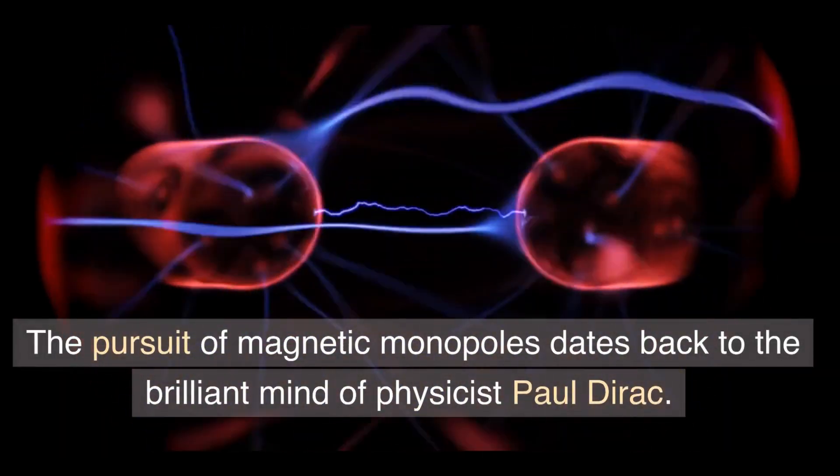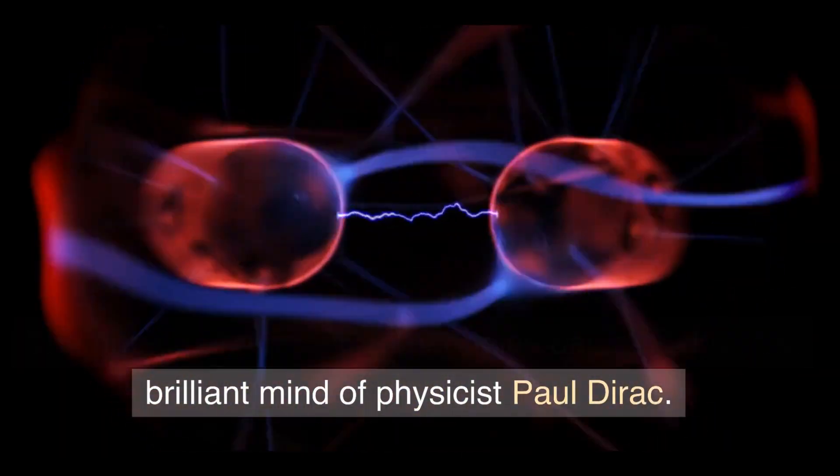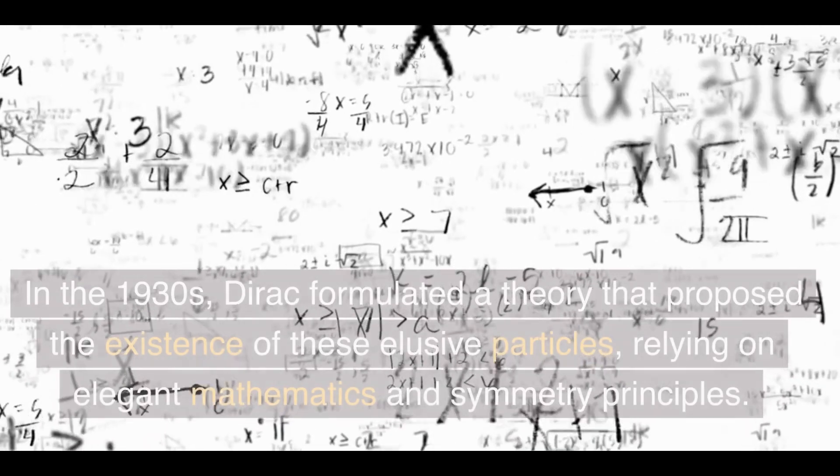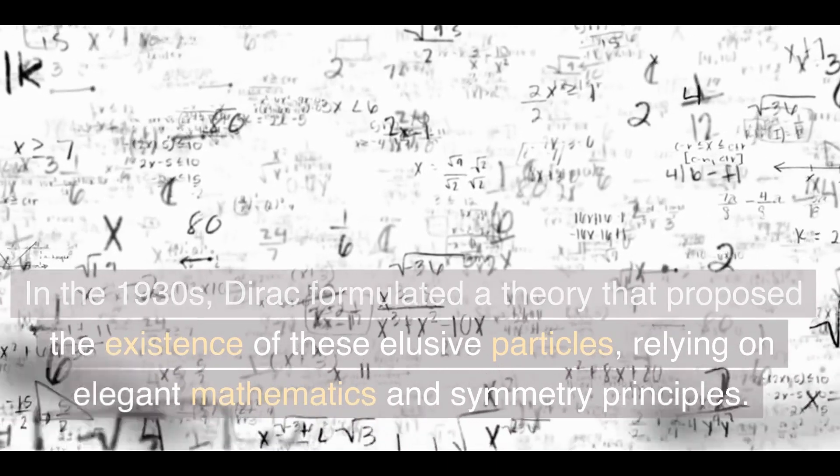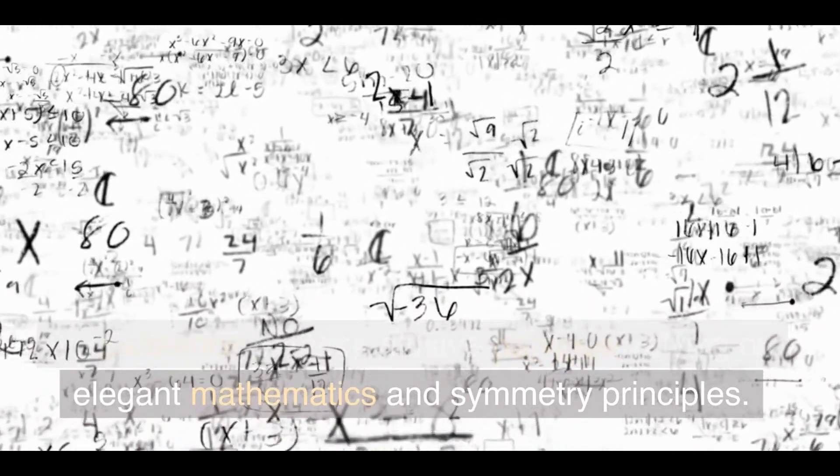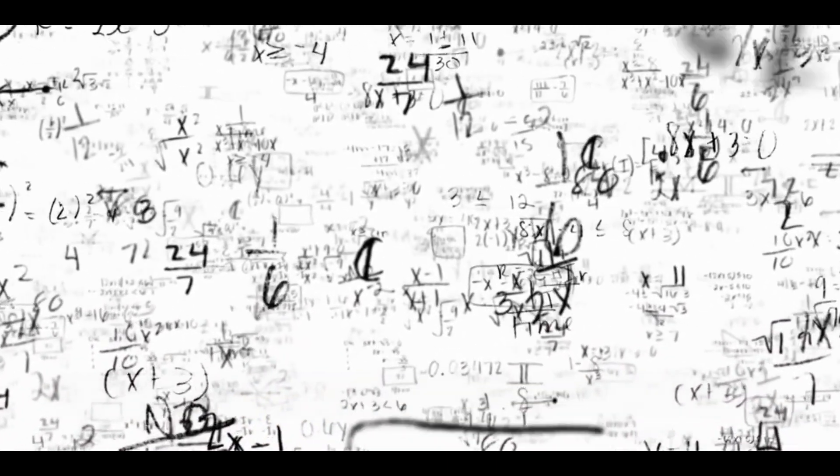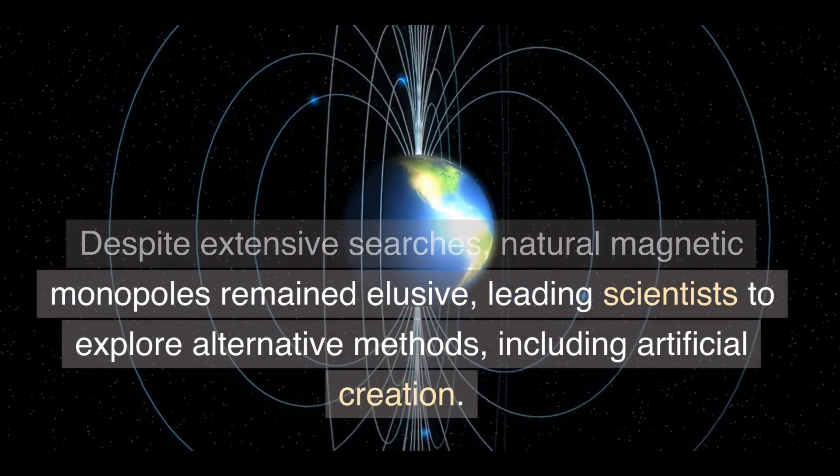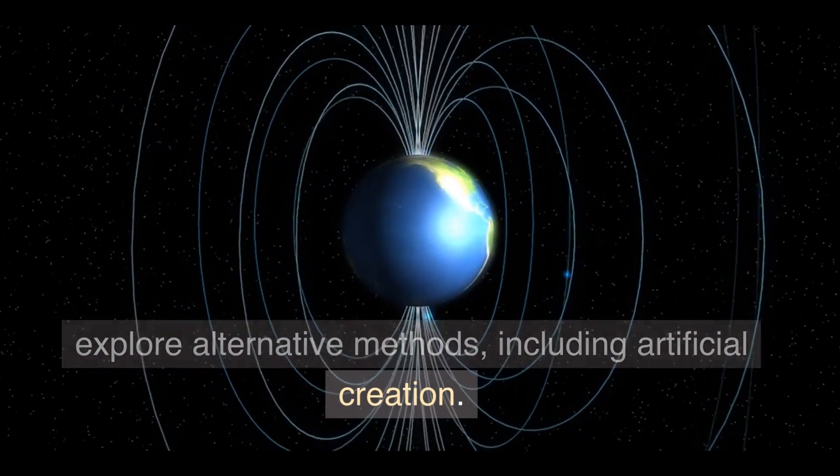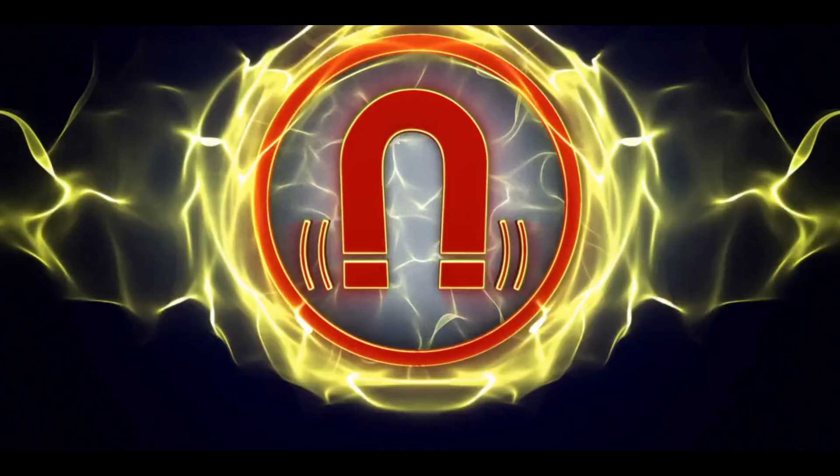The pursuit of magnetic monopoles dates back to the brilliant mind of physicist Paul Dirac. In the 1930s, Dirac formulated a theory that proposed the existence of these elusive particles, relying on elegant mathematics and symmetry principles. Despite extensive searches, natural magnetic monopoles remained elusive, leading scientists to explore alternative methods, including artificial creation.